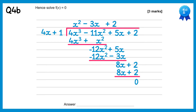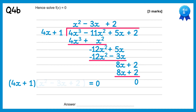So we've now been able to factorise this. We can write it as 4x plus 1 times our quadratic equals 0. The quadratic will factorise further to x take away 1, x take away 2. Then we get our solutions: the first bracket gives us x equals negative one quarter, the second bracket gives x equals 1, and the final bracket gives x equals 2.